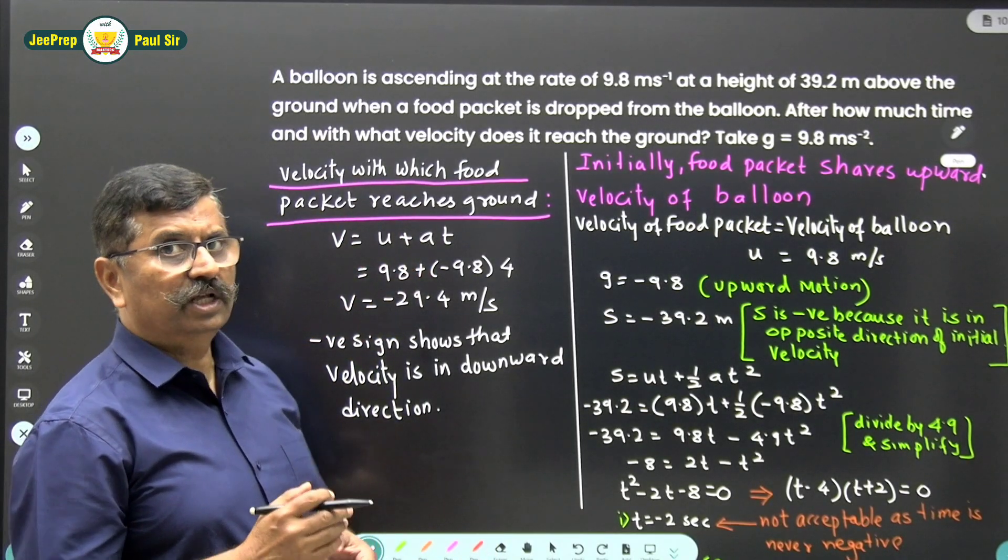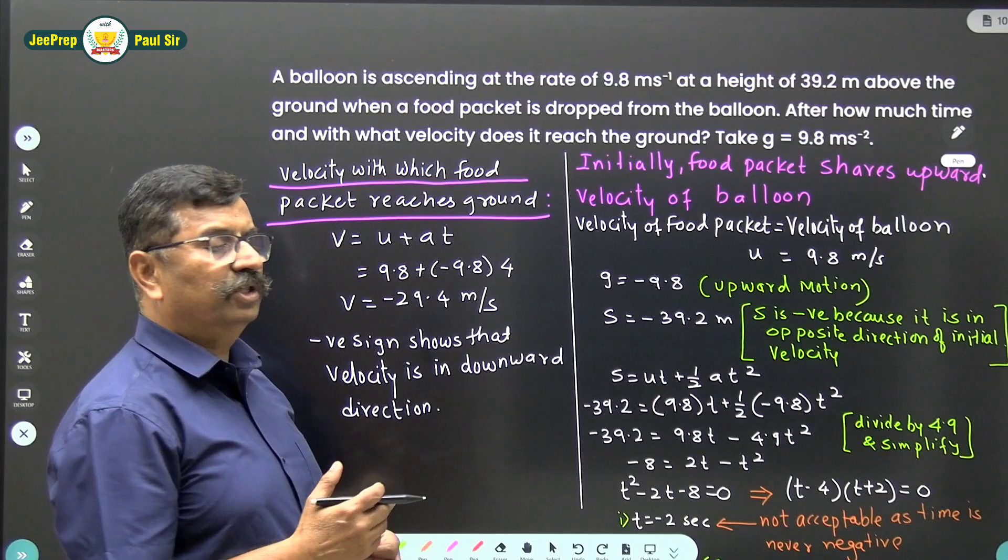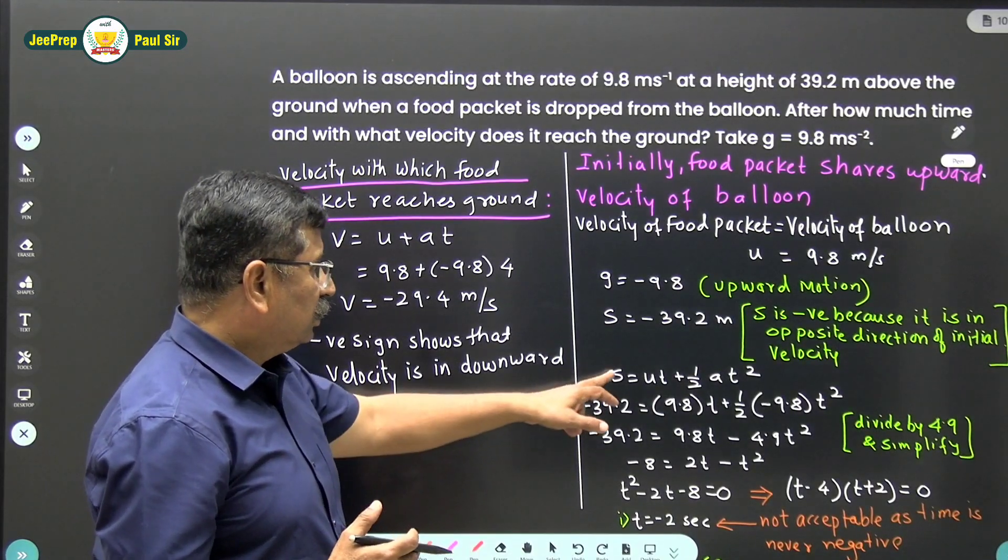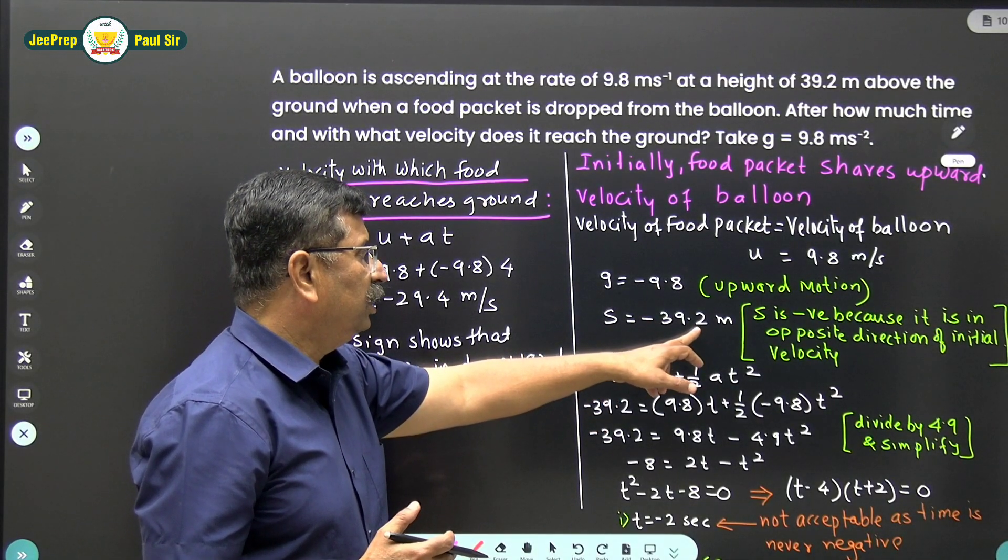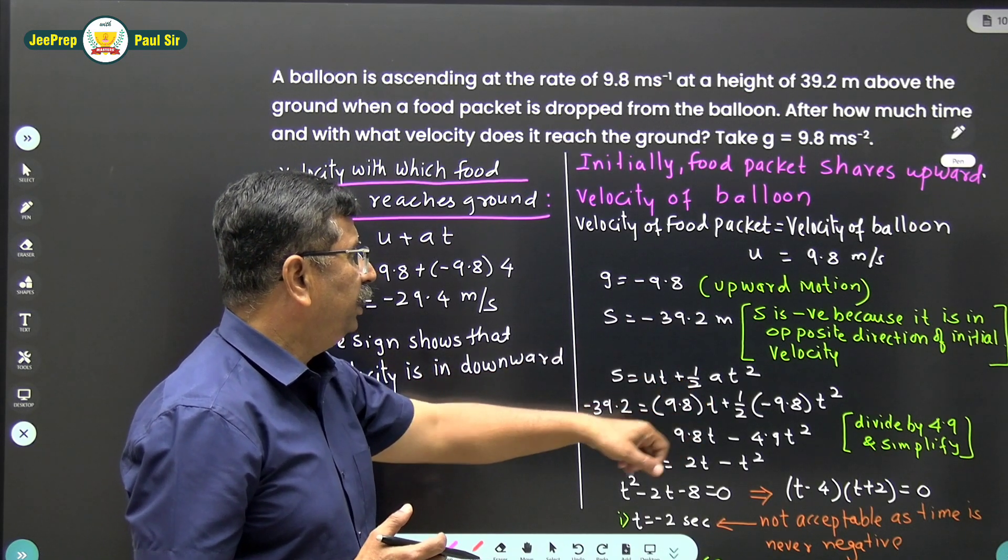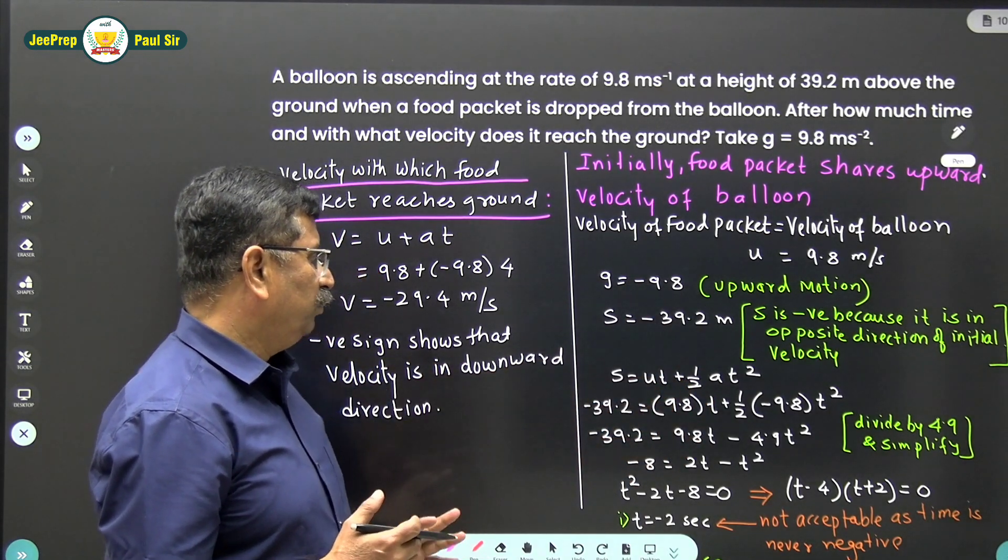s is negative because it is in the opposite direction of the initial velocity. I will substitute s as minus 39.2 meter, g equals 9.8, and u equals 9.8.